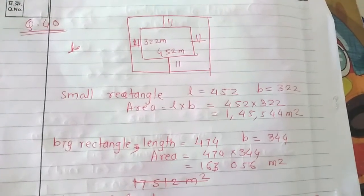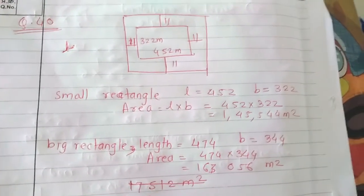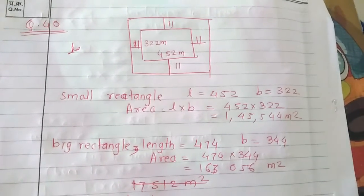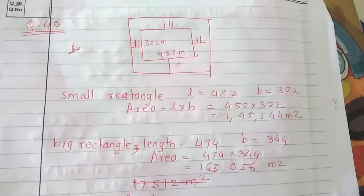In this question to find the area of the road we have to subtract the area of small rectangle from the area of the big rectangle.